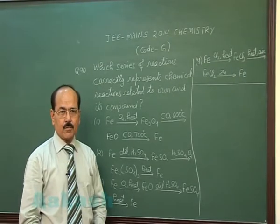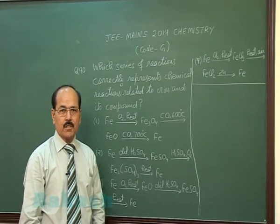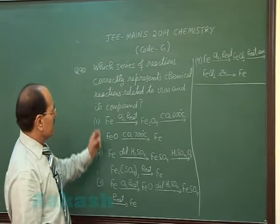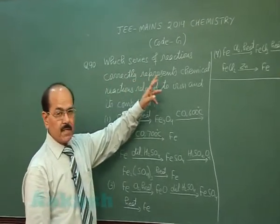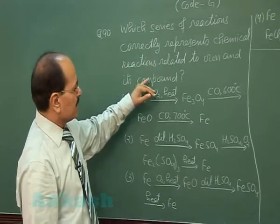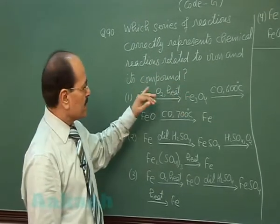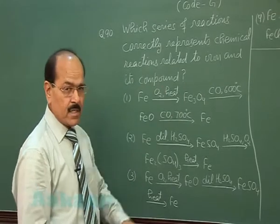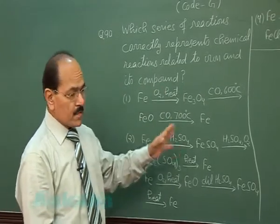Here we are with the last question of this part, question number 90, which asks: which series of reactions correctly represents chemical reactions related to iron and its compounds? Four options are given.